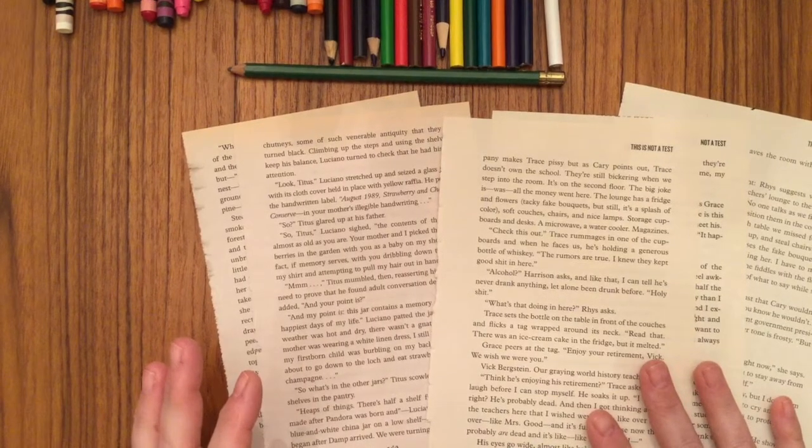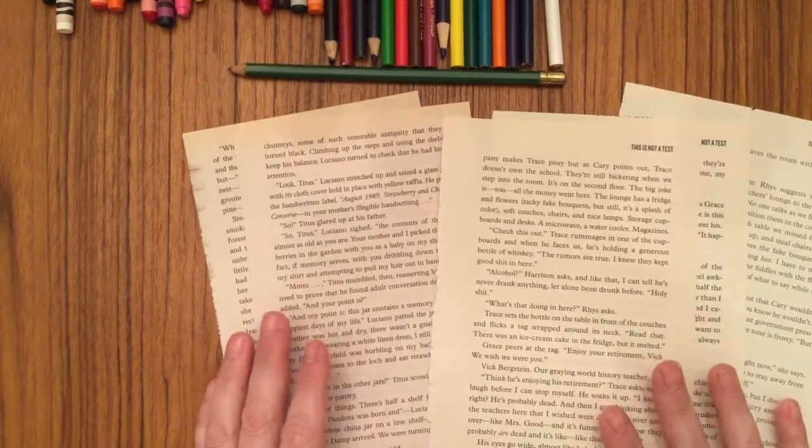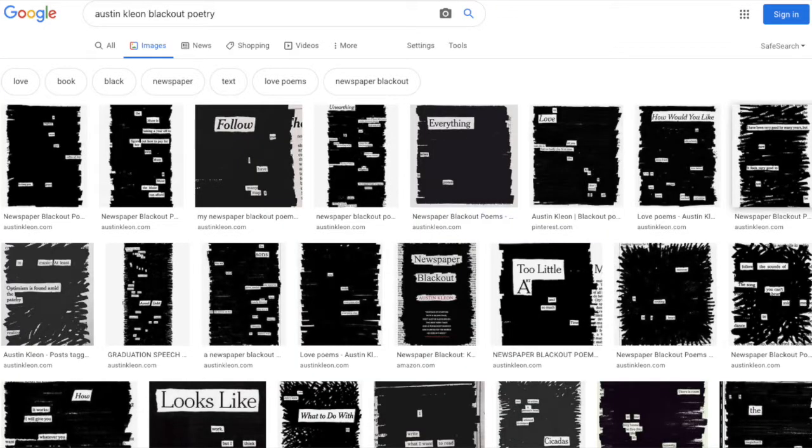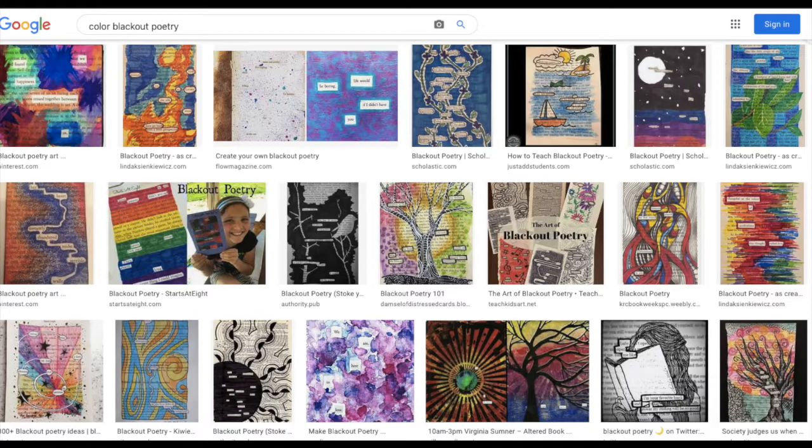The first time I heard about blackout poetry it was because of a man named Austin Cleon. Austin Cleon lives in Texas and used to take newspapers and use markers to black out most of the words and leave some that he thought sounded really good together. This was his poetry, but there are some other kinds too.